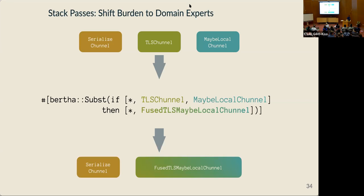Bertha's solution is to let domain experts define what we call stack passes — rule-based optimizations to the channel stack. These stack passes are analogous to optimizations used on data flow graphs in machine learning, data analytics, and compilers. Domain experts can specify general patterns of channels to replace, and different application developers can then apply those patterns to the channel stack they use for their application. In Bertha, we defined a pattern matching mini-DSL for domain experts to write stack passes with.